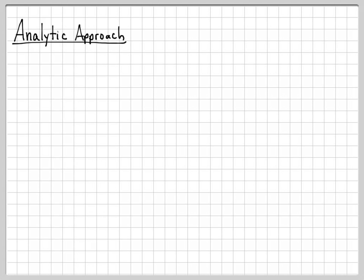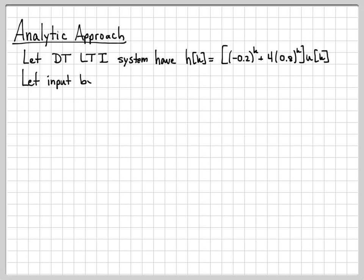So in this analytic approach, we're going to deal with a discrete time linear time invariant system whose impulse response is given as h(k) = (-0.2)^k + 4(0.8)^k u(k). And the input is given as x(k) = 2^(-k) u(k). So we know the impulse response of the system, we know the input of the system, and we are asked to find the zero state response.